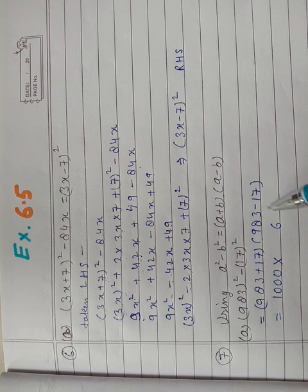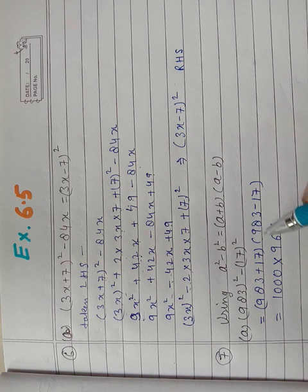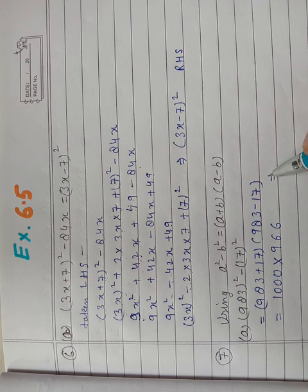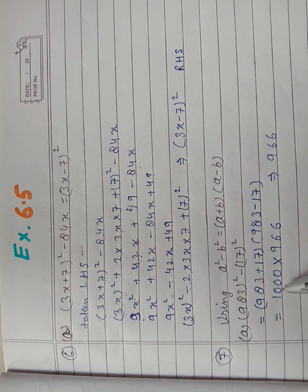983 + 17 = 1000, and 983 - 17 = 966. When you multiply these, you will get 966,000.